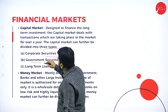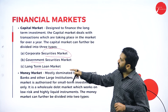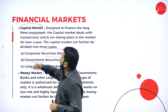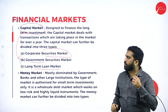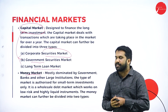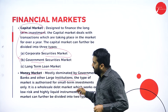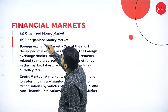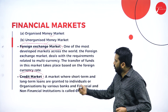Under the financial market, we find the security market, government security market, and long-term loan market. Under capital market, there are three categories: corporate securities, government securities, and long-term securities. Under money market, it is mostly dominated by government banks and other large institutions. We also have organized money market, unorganized money market, foreign exchange market, and credit market.